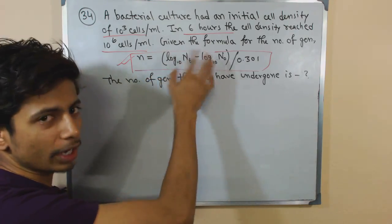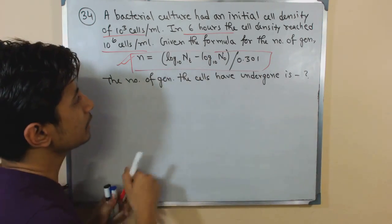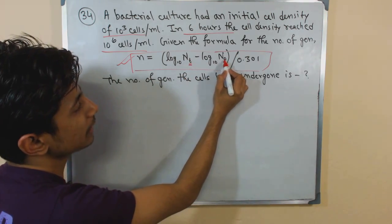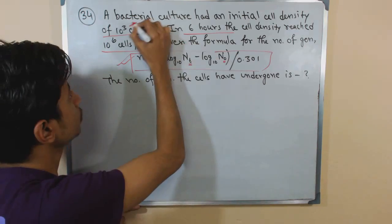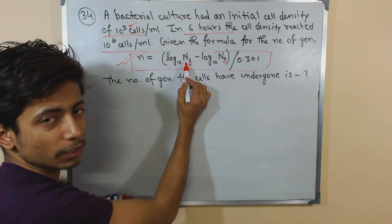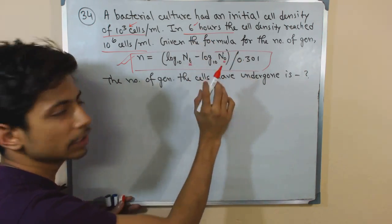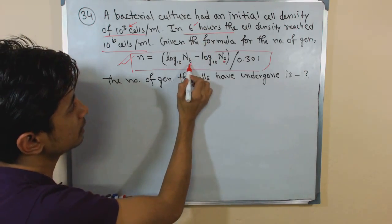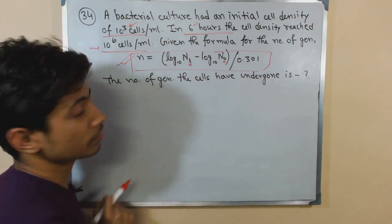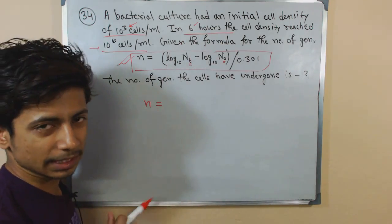The number of generations, small n, equals log Nt minus log N0 divided by 0.301. Here, log Nt means the population density after time t, and log N0 means the population at time zero — that is the starting density of 10 to the power 3 cells per ml. Note that the time value of 6 hours is not required to get the result using this formula.